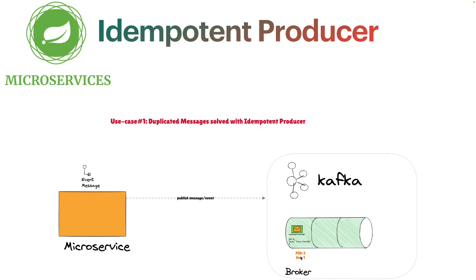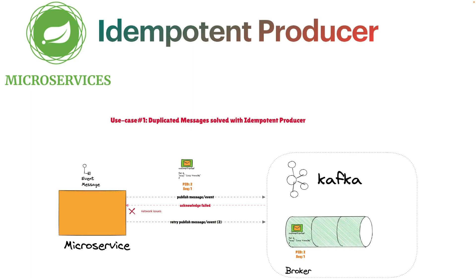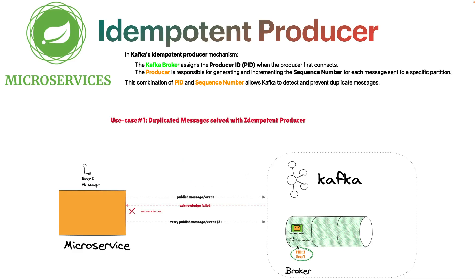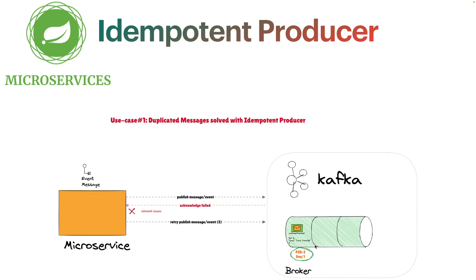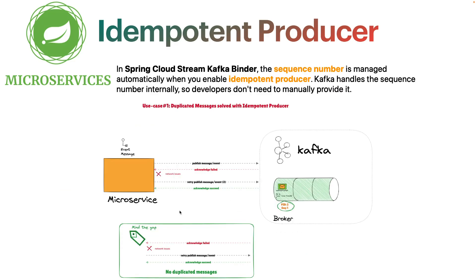If Kafka fails to send the acknowledgment and the producer retries, it sends the same message with the same producer ID (2) and sequence number (1). When Kafka receives this message again, its internal logic will detect the duplication and discard it, then simply send the acknowledgment. The message is not duplicated. This is very nice.